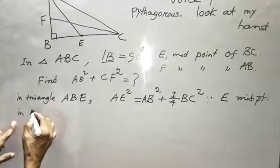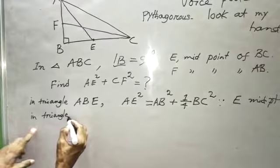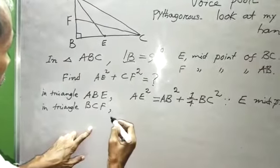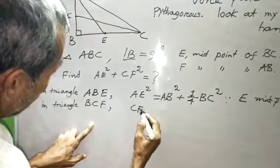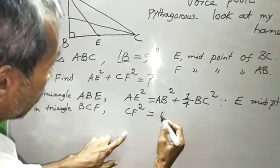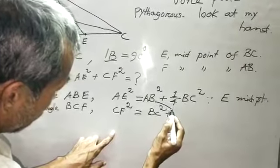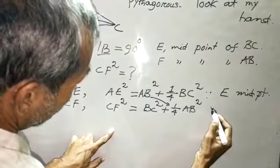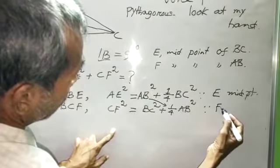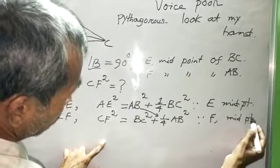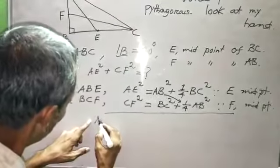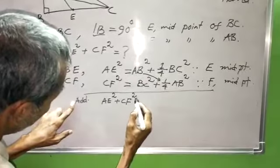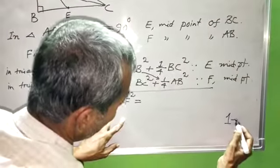In triangle BCF, CF square equal to BC square plus one by four AB square. Therefore AE square plus CF square equal to AB square plus BC square plus one by four AB square plus one by four BC square.